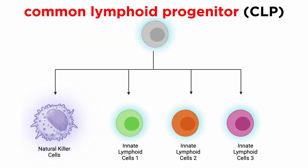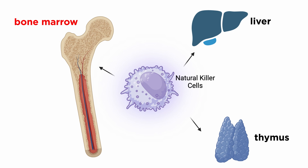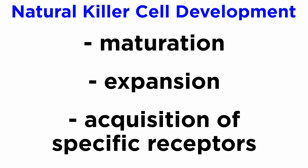Similar to T and B cells, NK cells also develop from what are known as common lymphoid progenitor cells, or CLP. The bone marrow is the primary site of NK cell development, but they also develop in the liver and thymus. The development of NK cells progresses through various stages of maturation, expansion, and acquisition of specific receptors.